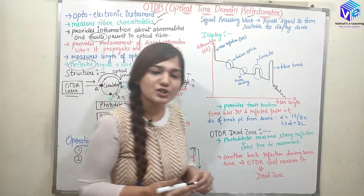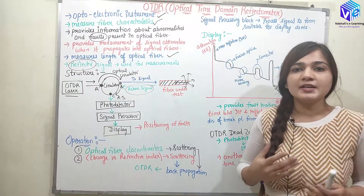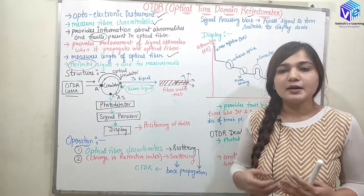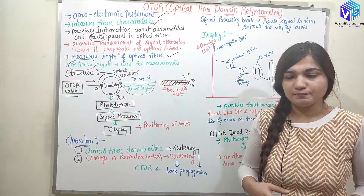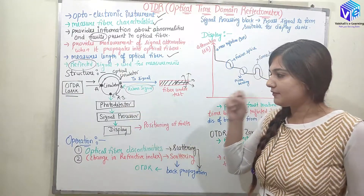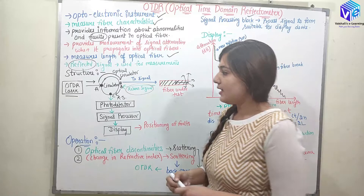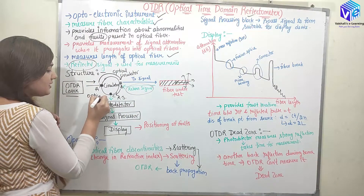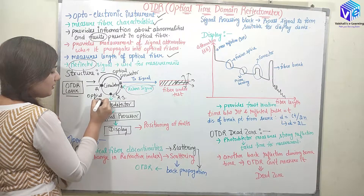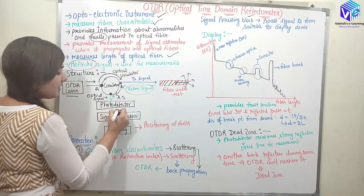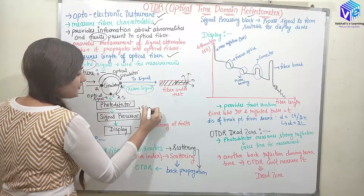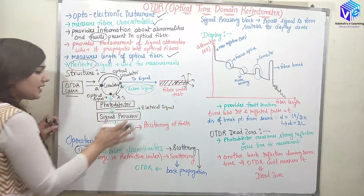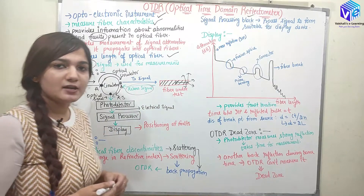The photo detector diodes take the light signal and convert it into electrical form. So this photo detector converts the optical return signal into an electrical signal, which is then fed to the signal processor.